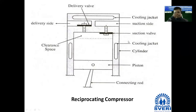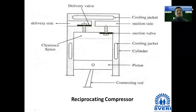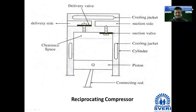In the previous lecture, we covered the classification of the compressor. Mainly, there are two types of compressor: reciprocating and rotating. And in the reciprocating compressor, we are right now concentrating on the single acting reciprocating compressor. Here we can see the diagram of the single acting reciprocating compressor, and I have explained this diagram to you — the construction has been discussed.